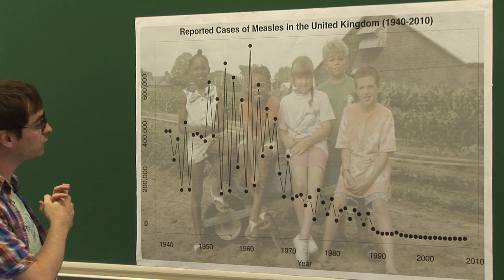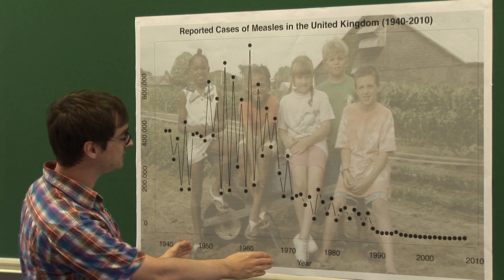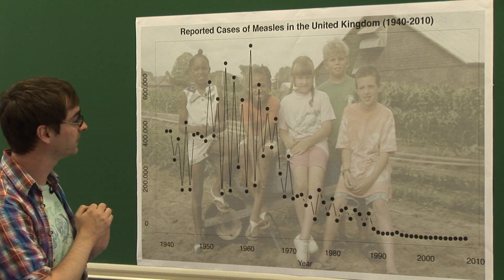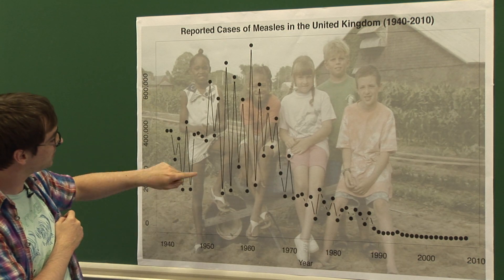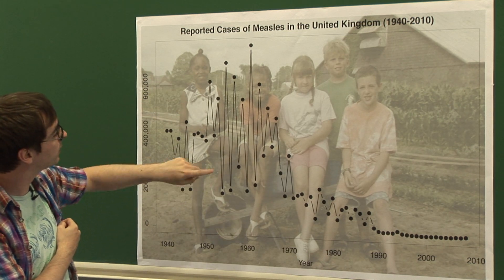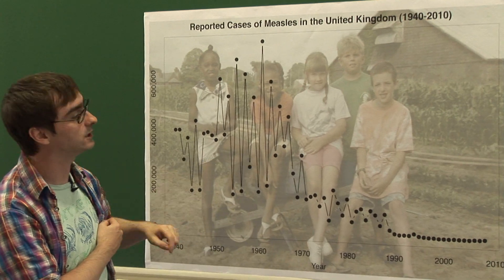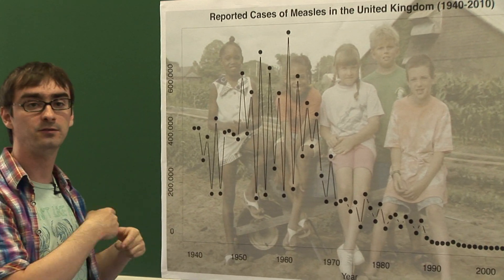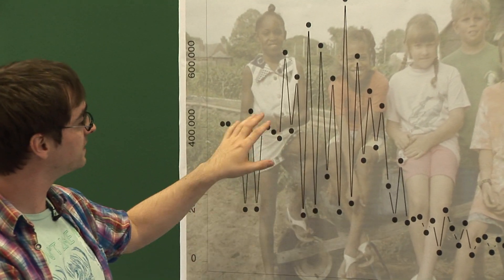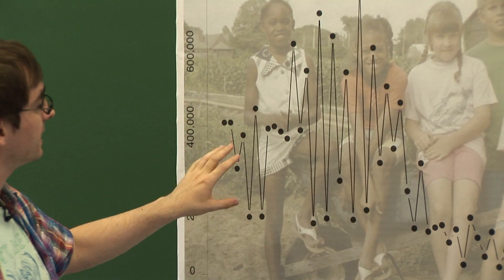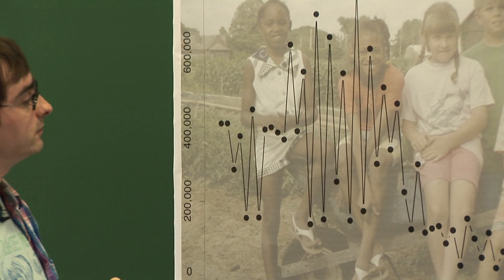The most striking period of time is between 1950 and 1970. During these two decades, we saw this really dramatic pattern where there wasn't an epidemic of measles every year, but every second year. This is quite different from the previous decade, where more or less there was an epidemic every year.